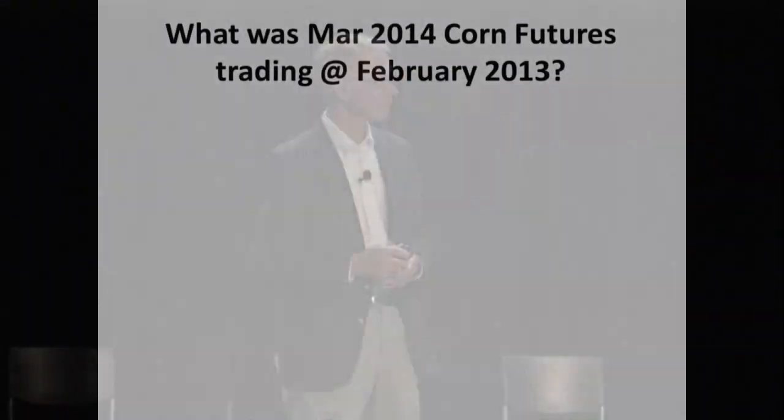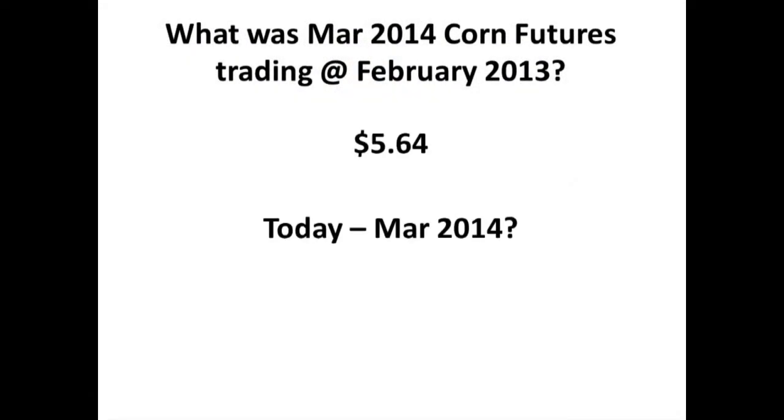We've been through some very high feed prices. What was the March 2014 futures contract trading at a year ago? Five sixty-four a bushel. Today, over a dollar a bushel less. Feed is a big cost to production in the cattle business. So we've got a hundred-ninety-dollar-higher 550-pound feeder cattle price than last year, and over a dollar a bushel lower corn. We have higher prices and lower feed costs — so there should be lots of profit potential, right? Well, there's still a lot of risk, so what does the record cattle market look like?